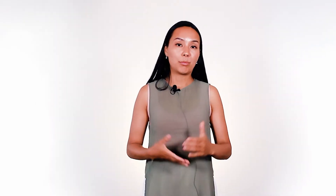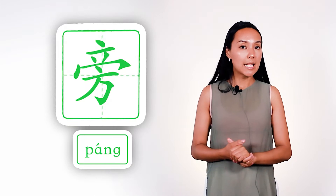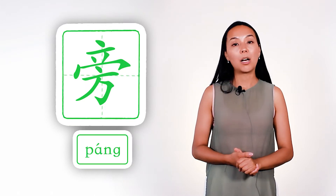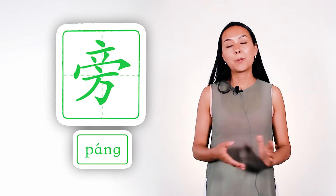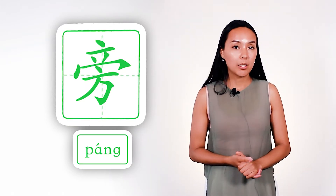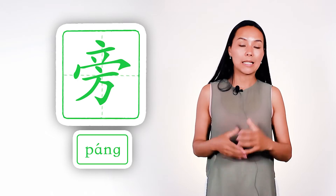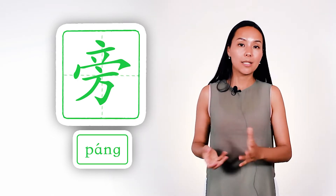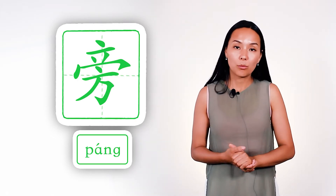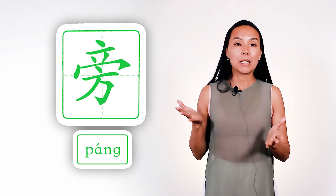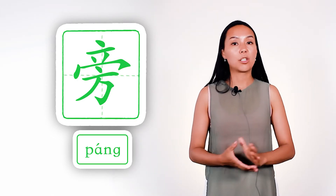Now, let's study characters with this radical. The first character is 'beside' or 'near' — pang. Here, while we have square, it's easy to guess: square is a symbol of a place, so something is near to this place.